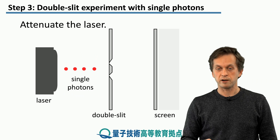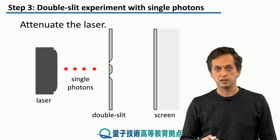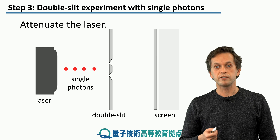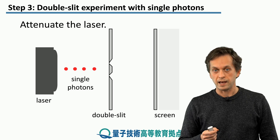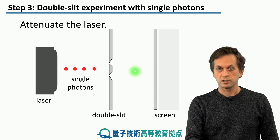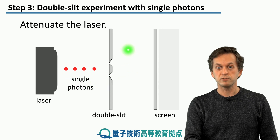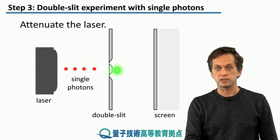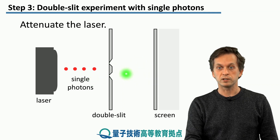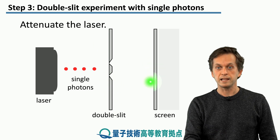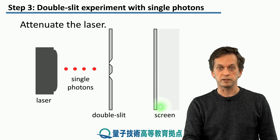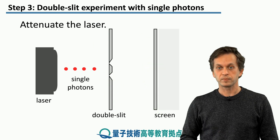Now, let's consider the scenario where we attenuate the laser light to such low levels that it's only firing single photons at a time. Furthermore, the level of attenuation is so high that we can be pretty sure there's only one photon at a time between the screen with the double slits and the screen where we are recording the pattern.